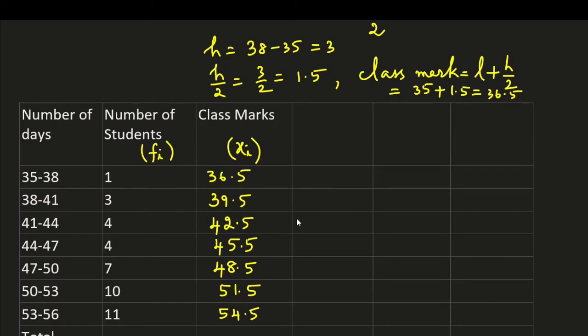Now let us use deviation or step deviation method. Here let us take the middle value as assumed mean. 45.5 as our assumed mean. Deviation di is equal to xi minus a. Here a is equal to 45.5.